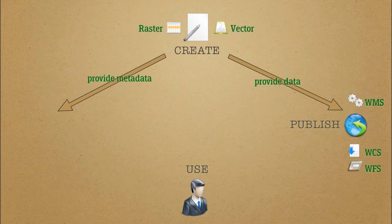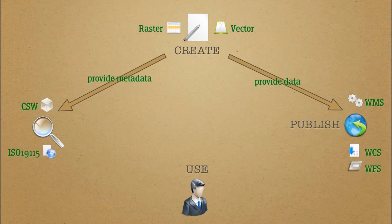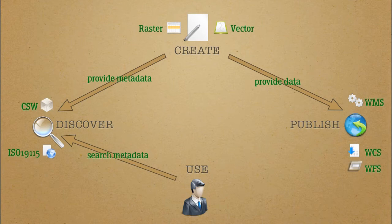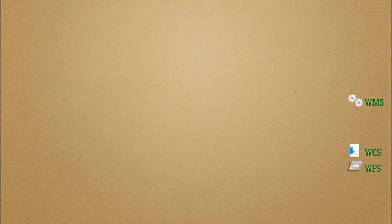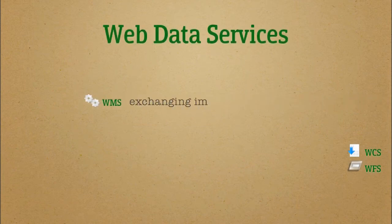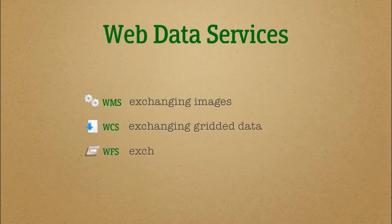We'll find out what they stand for on the next slide. Data users discover the published data in the metadata catalog, and then access the data itself through web services that feed into several types of clients — such as personal computers, internet web mapping applications, or mobile devices like cell phones and tablets. The standards most used for web applications are WMS for image services, WCS for gridded data services, and WFS for vector data services.